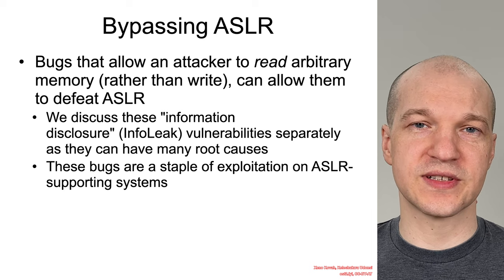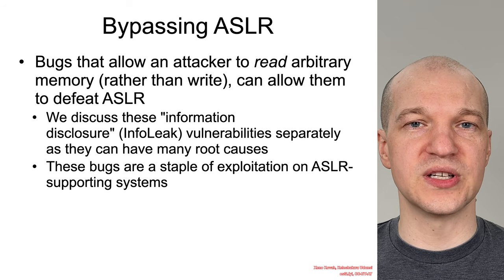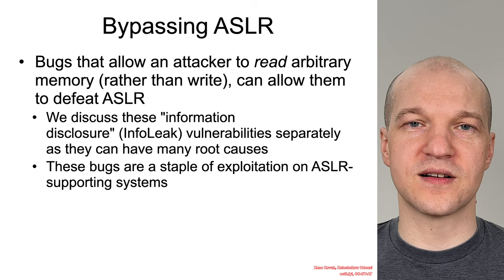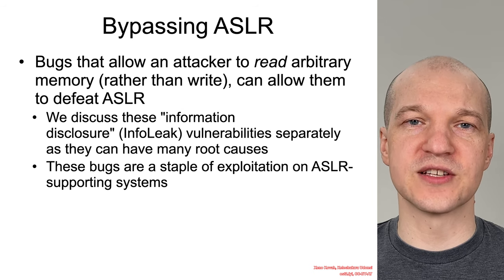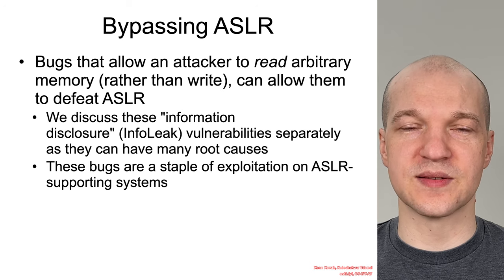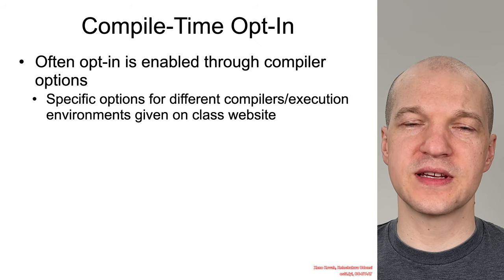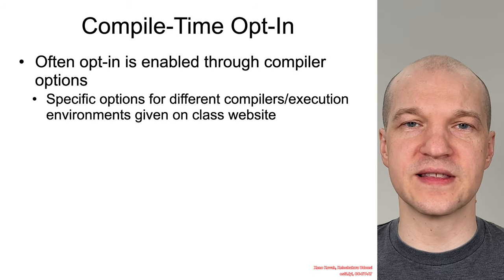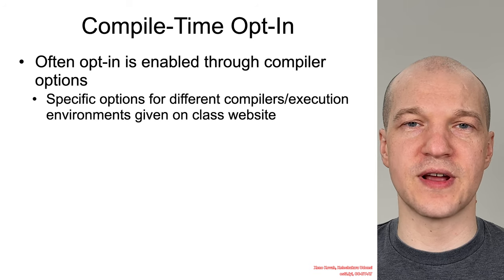Info leaks are the type of thing that allow an attacker to architecturally bypass ASLR. It's still beneficial to have the mitigation in place because you're effectively making the attacker find an extra bug — instead of one bug to win, now they've got to find two bugs. These are a fundamental staple of exploit chains that try to successfully exploit systems that support ASLR. Compilation time opt-in is often required, so check the website for compiler options necessary to declare that your program supports address-based layout randomization.